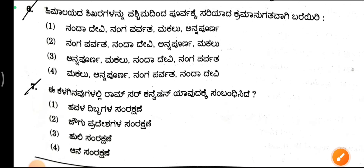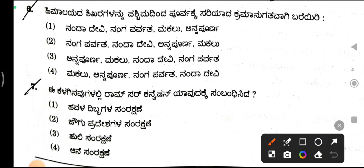Himalayan peaks — from west to east in the correct order. Pashchimadindanda to the east side, in the correct sequence. Here's the clear sign for the ordering.